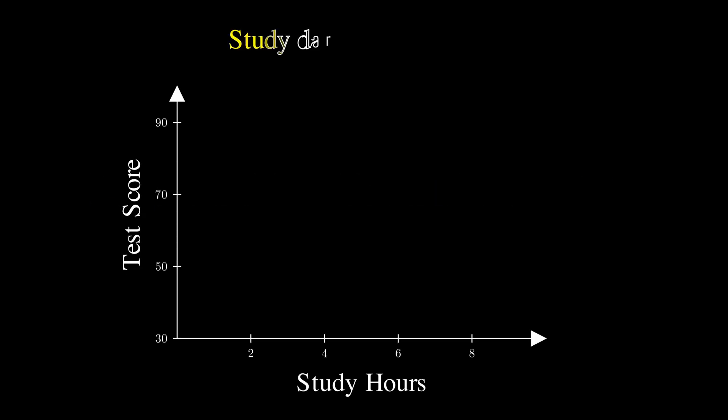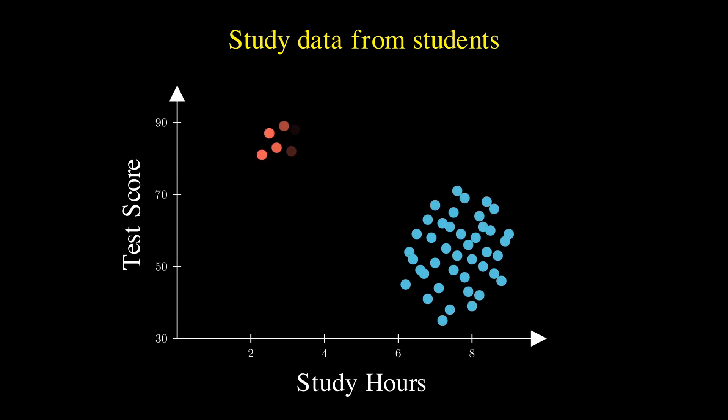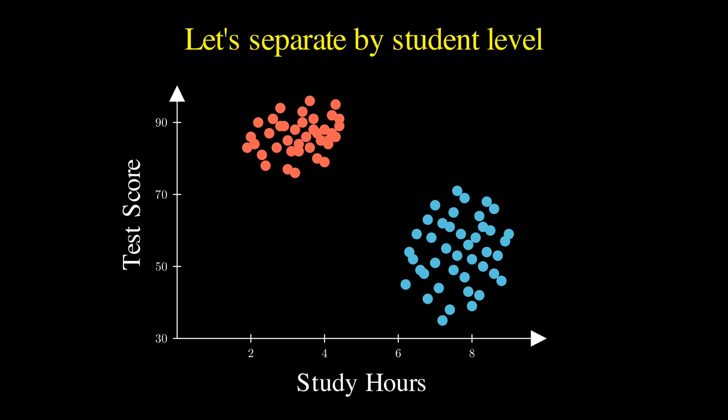Now, let's explore this with a continuous example, using test scores of undergraduate students, depicted here with blue, and of some graduate students, depicted here with red. When we plot our data points on a graph, we can identify two distinct groups.